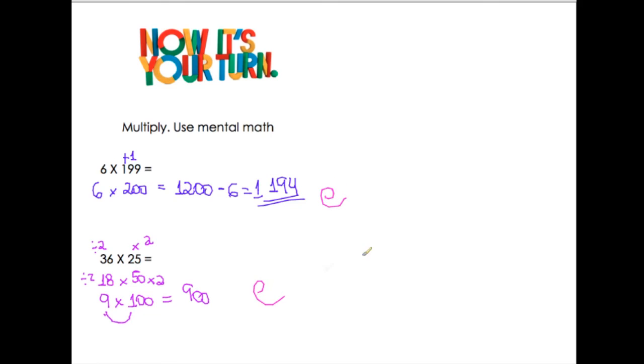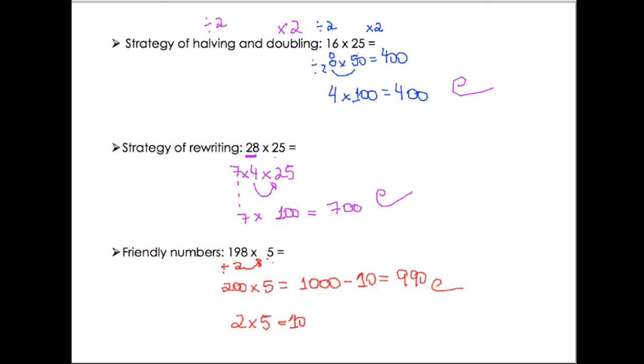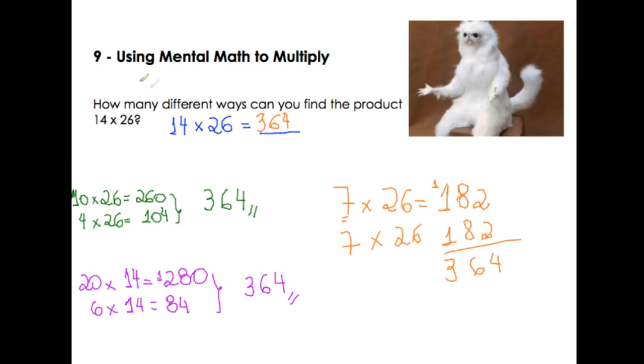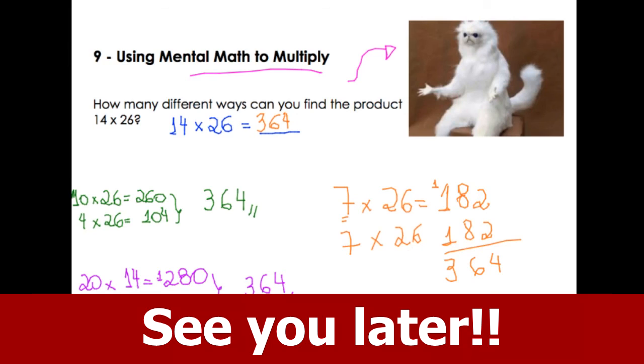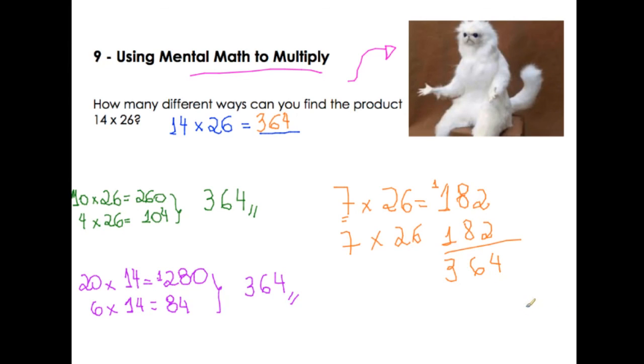It is easy. Mental math to multiply, we have three strategies. Halving and doubling is the first one. Rewriting, so we take a number to rewrite the multiplication sentence. And friendly numbers. Be careful, if you add, in the end you need to subtract. Three strategies to help you understand mental math to multiply. Please don't give me this face anymore because now you know how it works. See you next video. I hope you liked it. Bye bye.